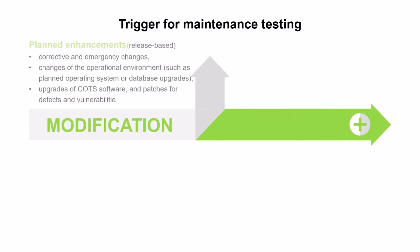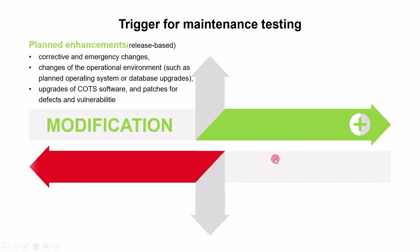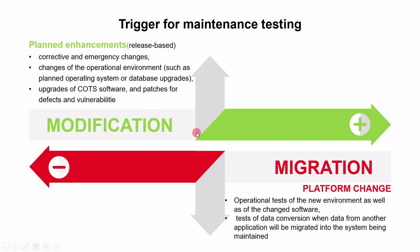Triggers for maintenance testing are of two types: modification and migration. When the change is due to modification, it refers to planned enhancements. Examples of planned enhancements are corrective and emergency changes, changes of the operational environment such as planned operating system or database upgrades, upgrades of commercial off-the-shelf software, and patches for defects and vulnerabilities.